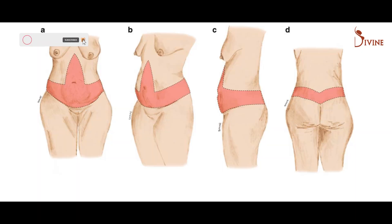If you have skin looseness on the lower abdomen, sides, and even on the back, you need a belt lipectomy, where we remove skin from the front, sides, and back. Recovery times: liposuction takes about a week, a mini tummy tuck about a week, a full tummy tuck about 10 days, and a belt lipectomy about two weeks. You can be back in office after an abdominoplasty in 12 to 13 days, and after the belt in about 20 days.